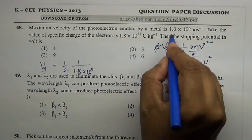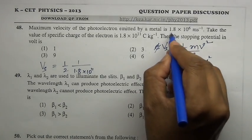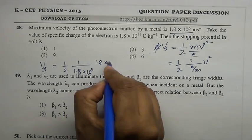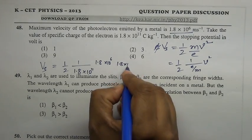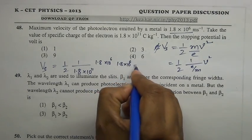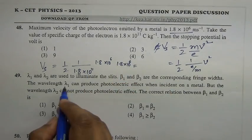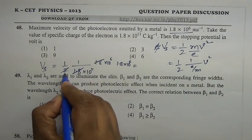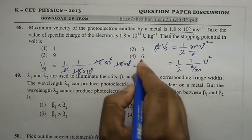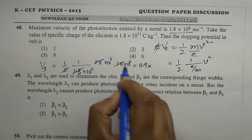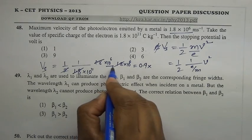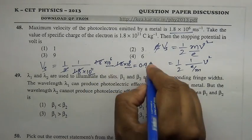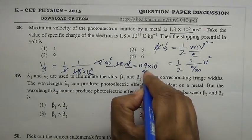Stopping potential Vs equals (1/2) times (1 / 1.8×10¹¹) times (1.8×10⁶)². Since we have v² the 1.8×10⁶ squared gives 1.8² × 10¹², and dividing by 10¹¹ gives 10¹. The factor of 1.8² over 2 times 1.8 cancels partially, giving approximately 9 volts.